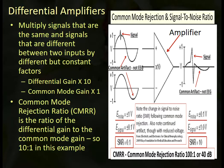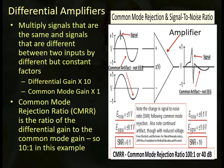Differential amplifiers multiply signals that are the same and signals that are different between two inputs by different but constant factors. We record the electrical activity — the voltage differential — between the active sensor on the scalp and a system reference or system ground. This electrical difference is then compared to another measurement from another electrode, also compared to the system reference, giving us two inputs into the amplifier.